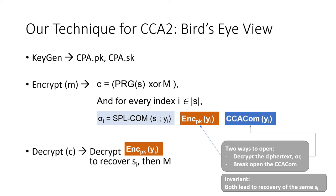Recall that the difference in the CCA2 setting is that the adversary continues to have access to the decryption oracle even after obtaining the challenge ciphertext, making the proof significantly trickier. In particular, despite the fact that in certain hybrids the challenger cheats in how the challenge ciphertext is generated — containing all these equivocations — we need to continue to ensure that the adversary maintains the invariant in all of their queries. This must hold even though the challenge ciphertexts sent to the adversary do not satisfy this invariant at various steps in the game. This is where we rely on the CCA property of the commitment scheme.